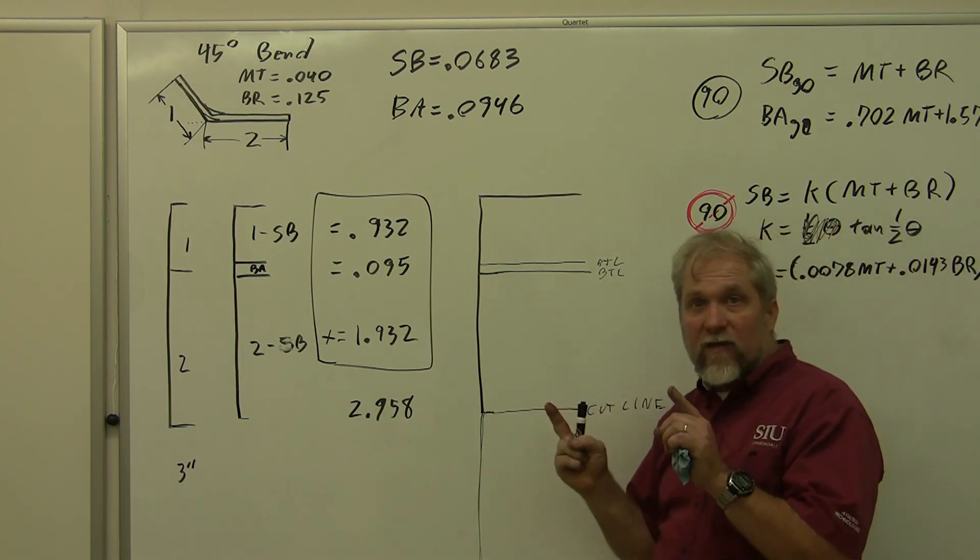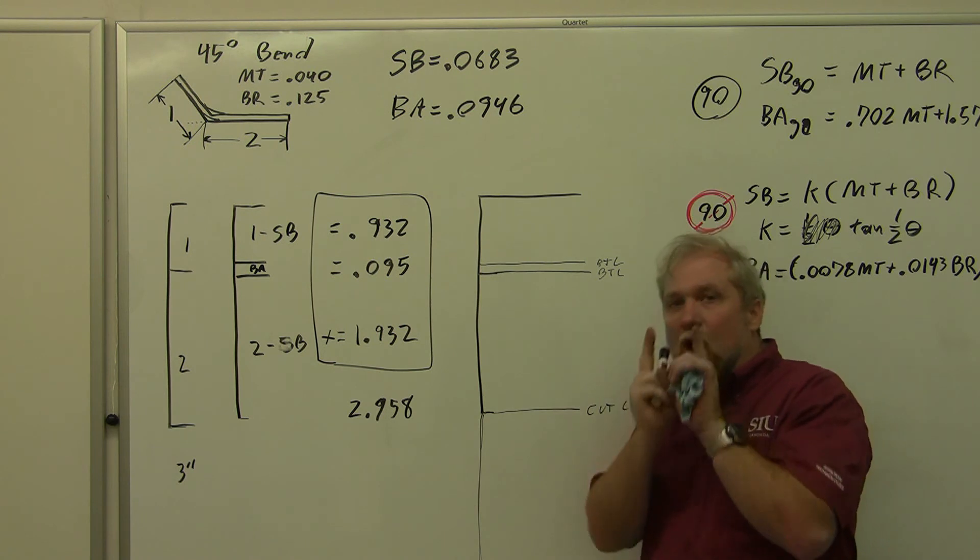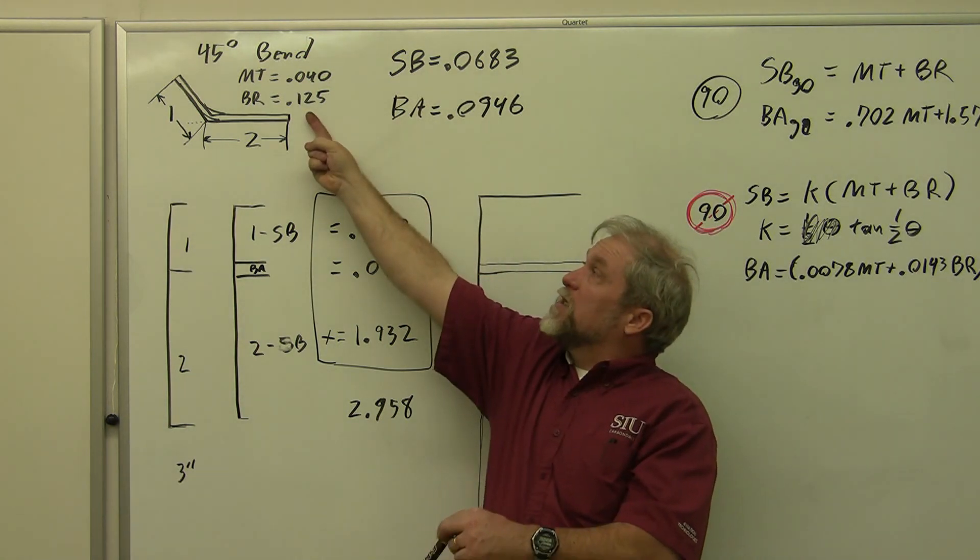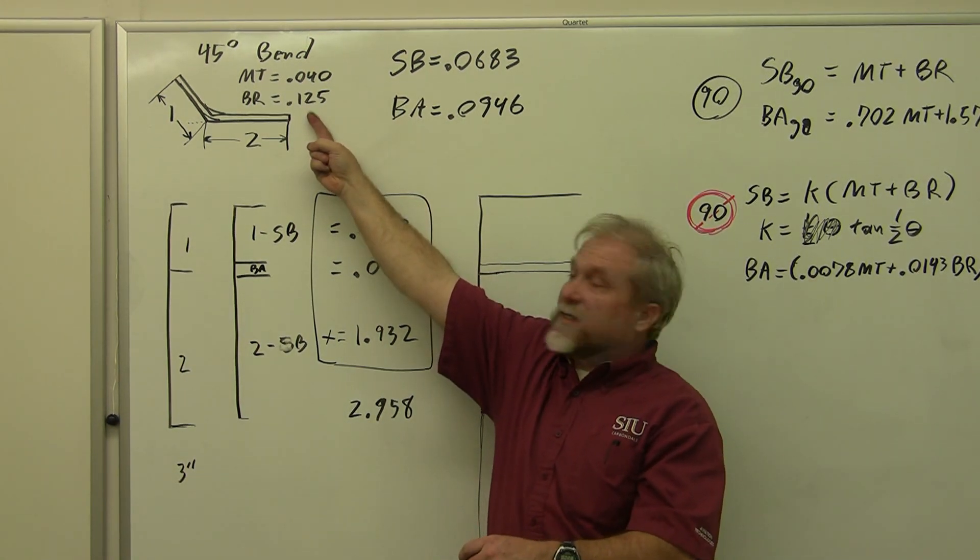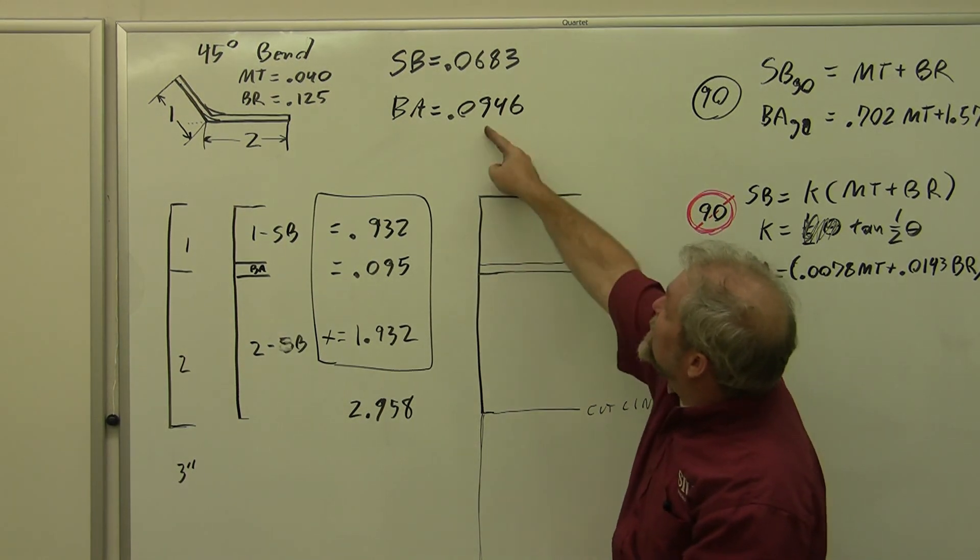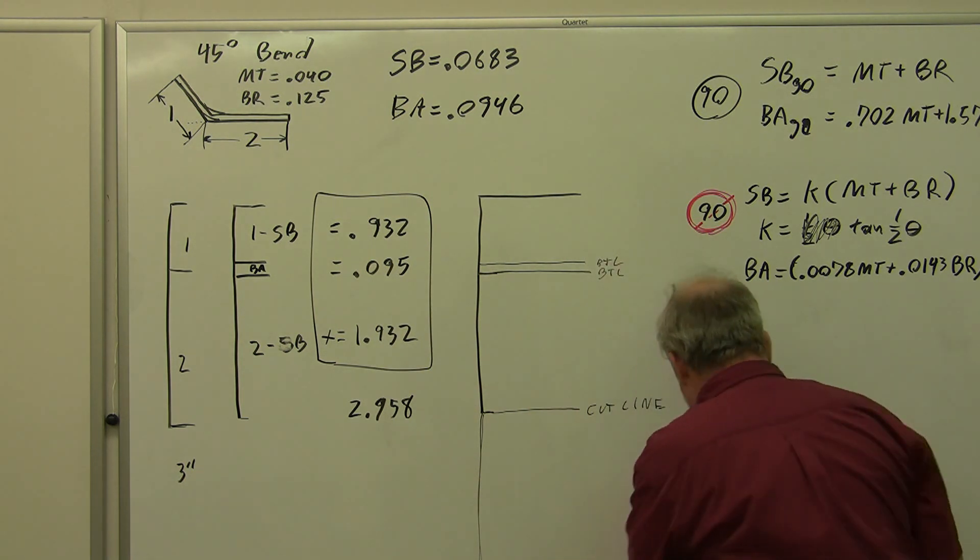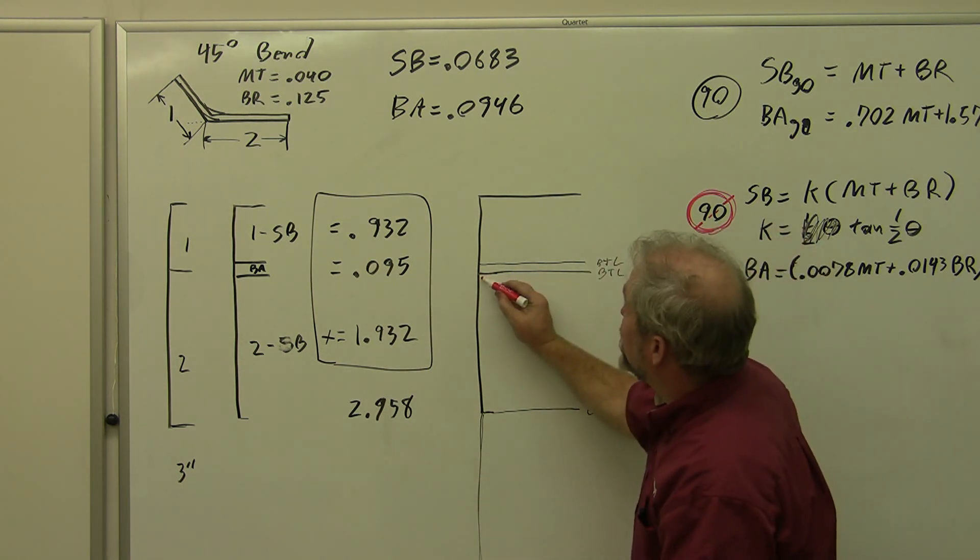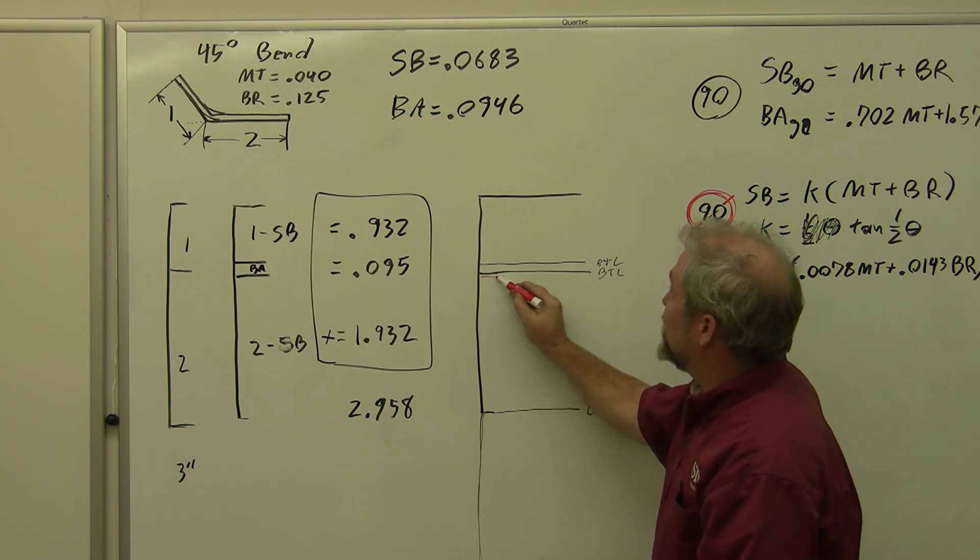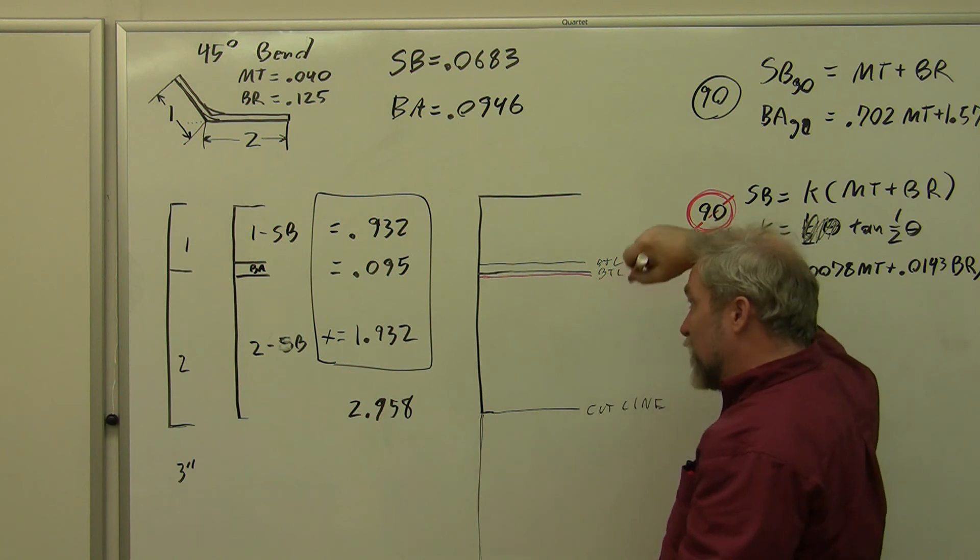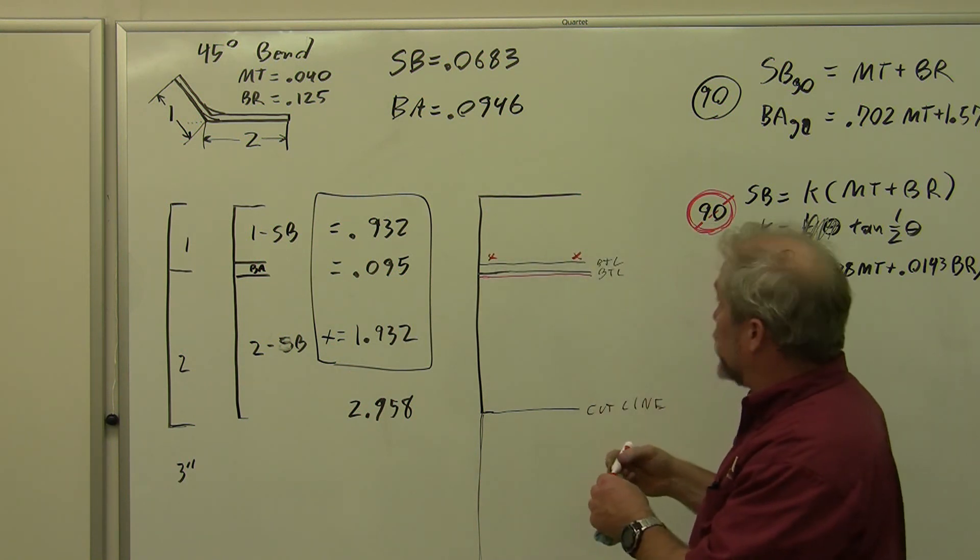Now we need to add our sight line in. How far is our sight line away from a bend tangent line? It is always, always one bend radius. 0.125, an eighth of an inch of bend radius. My distance between these lines is 0.0946. That is not very far. My sight line extends beyond my bend tangent line. When I add my sight line in, 0.946, I'm going to extend just beyond it. My sight line actually falls outside of the middle. A lot of people think the sight line is just between these two. It is not. On a small bend like this one, it falls outside of this.